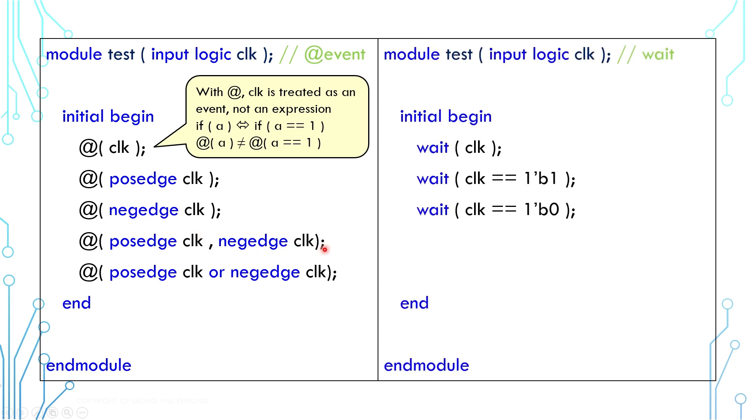Apart from @, we can also use the syntax wait, and here are some examples. The thing to note is that clock here is an expression. Wait clock is the same as wait clock equals to 1.